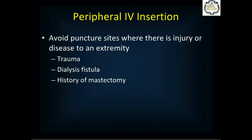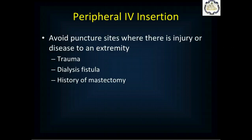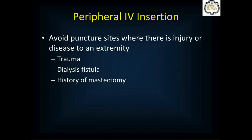Stay away from areas of injury, infection, or disease in that limb. Avoid areas with trauma or a dialysis fistula — if they're a dialysis patient, don't go on that arm. If they've had a mastectomy for breast cancer, they'll often have lymph nodes removed on that side, and you want to avoid starting an IV there due to circulation issues associated with those surgeries.